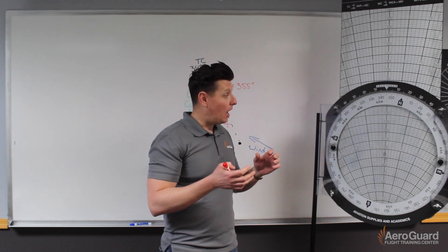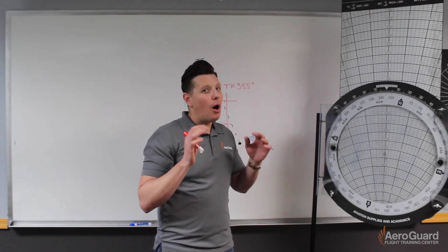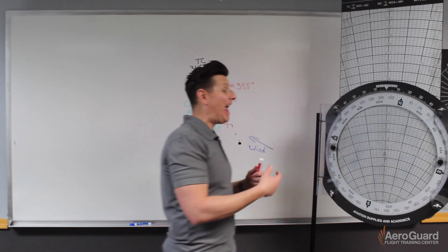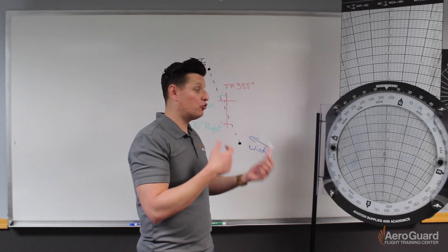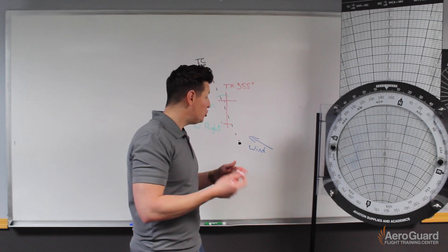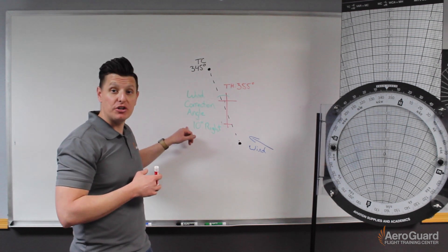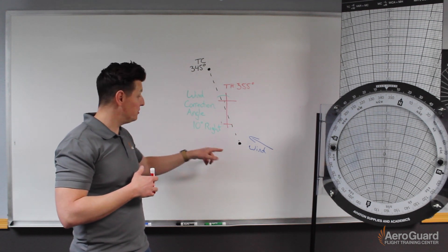And then what we're going to do is we're going to make our wind dot. Our wind dot, though, is going to be found at the intersection of our wind correction angle and our true air speed line. So, as we recall from before, our wind correction angle was 10 degrees to the right.